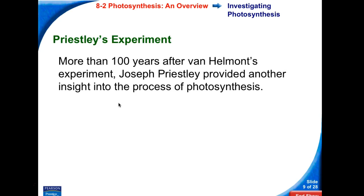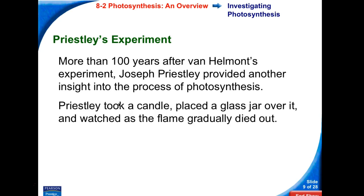More than a hundred years after Van Helmont's experiment, Joe Priestley provided another insight into the process of photosynthesis. This is what we refer to as Priestley's experiment. Priestley took a candle, placed a jar over it, and watched the flame gradually die out. You take a jar with a candle, put the jar over it, the candle goes out. Why did the candle go out? Another example is if you have a plate, adhere the candle to the plate, put a little water around the candle. If you put the jar over the candle, the candle goes out, the jar will fill up with the water. Why did that candle go out?